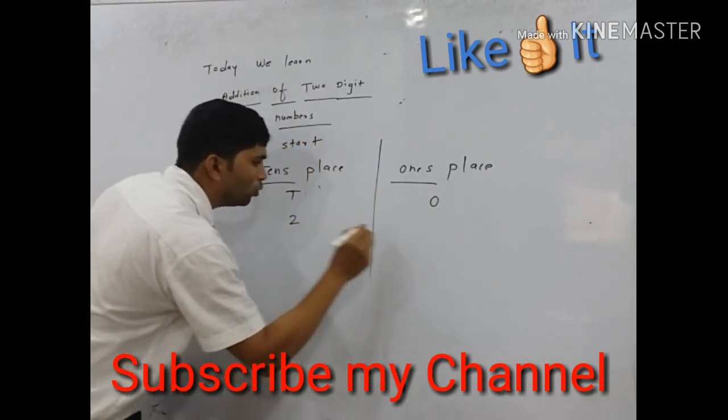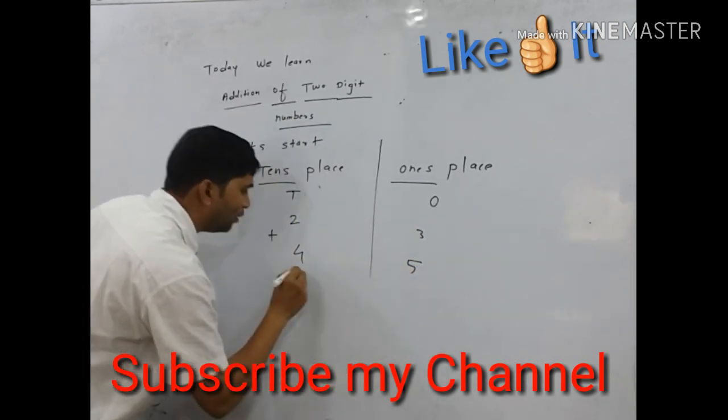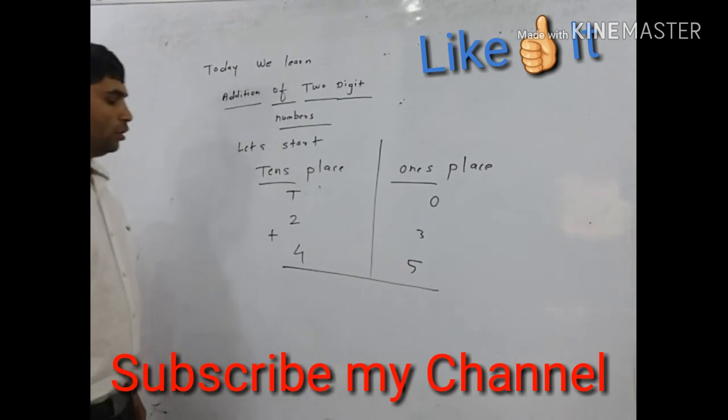Here is the number 2, 3 and 4, 5. We will add 23 number with 45.